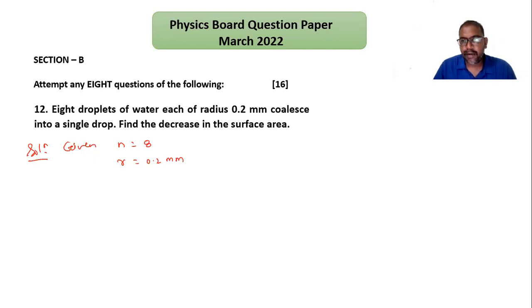Simply, decrease in surface area is area of droplets minus area of drop. You can find out area of droplets because you know the radius. We can find out radius of drop first.